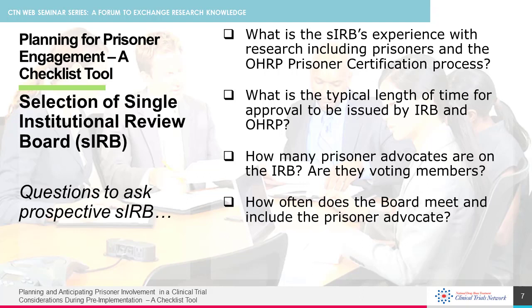Under the common rule, all NIH-funded multi-site studies require the use of a single IRB, which is the IRB of record for all sites involved in a multi-site protocol. When considering which IRB to utilize, you'll want to consider their experience applying for prisoner certification from OHRP. Questions to ask include: What is their experience with research that includes prisoners? Can they describe the certification process with OHRP? What is the typical length of time for issuance of approvals? How many prisoner advocates are on the IRB, are they voting members, and how often does the board meet with the prisoner advocate?